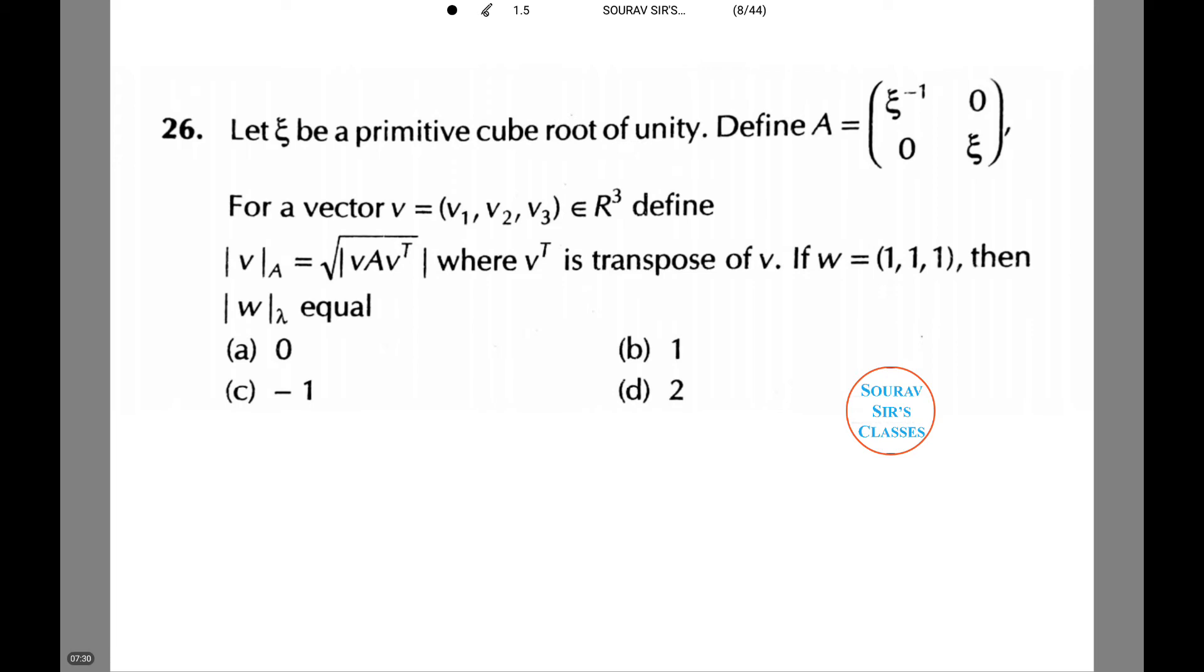We also define |v|_A equals √(vAv^T), where v^T is the transpose of v. Now if w equals (1, 1, 1), then |w|_A equals option A, which is 0.